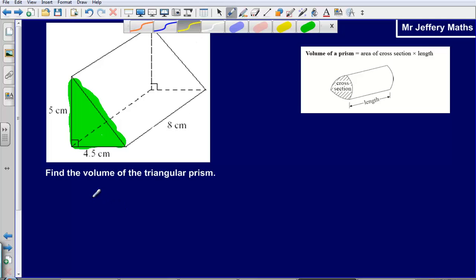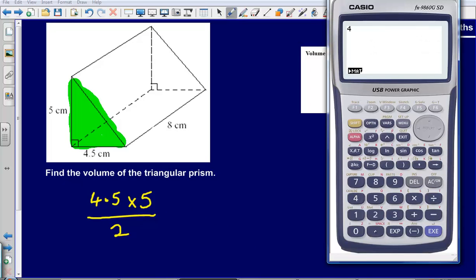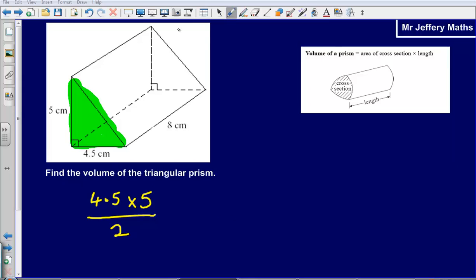Working out the area of the face, 4.5 times 5 divided by 2 for a triangle. So 4.5 times 5 divided by 2 gives us 11.25. The area of the triangular face is 11.25, and then we simply multiply that by the length, the distance that the triangle runs through the shape.